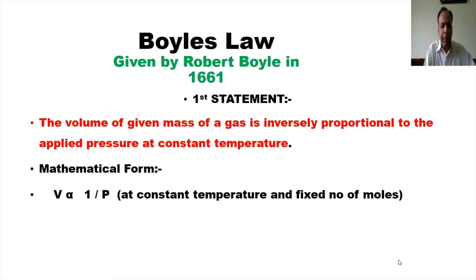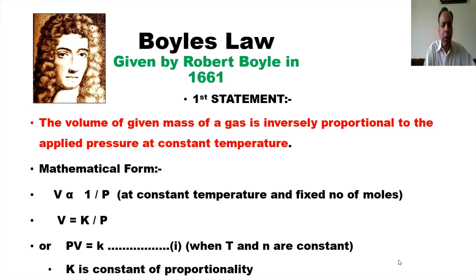The mathematical form is that volume is inversely proportional to one over P. If we remove the sign of proportionality and put a constant K, then V is equal to K over P. If we multiply P with V, then PV is equal to K, where K is called the constant of proportionality.